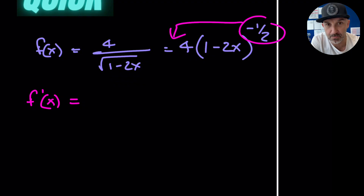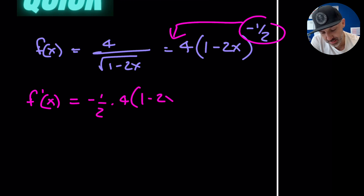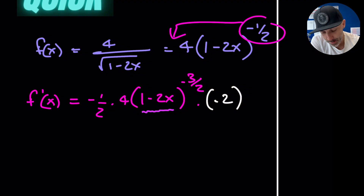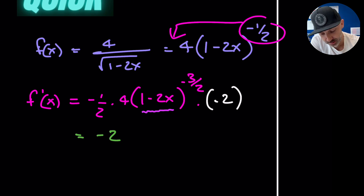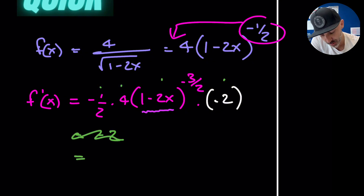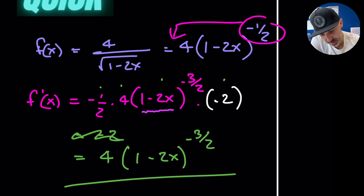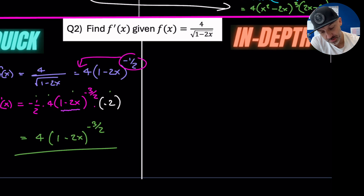Using the quicker chain rule method: multiply through by the power (−½), keep everything in the bracket the same and subtract 1 from the power, then multiply by the derivative of the bracket (−2). Combining constants: −½ times 4 is −2, and −2 times −2 gives positive 4. So the answer is 4(1 − 2x) to the power of −3/2.